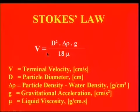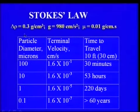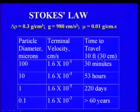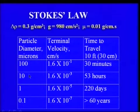To give some idea of how velocity affects particle settling rate: for a particle with density of 1.3 (density difference of 0.3 from water), gravitational force of 980 cm/s², and water viscosity at room temperature, a 100-micron particle takes about 30 minutes to travel 10 feet. If particle size decreases by a factor of 10, the time increases by a factor of 100, taking 53 hours. A 1-micron particle would take 220 days to travel 10 feet under gravitational force.